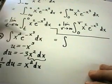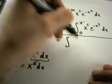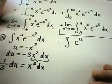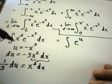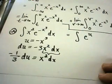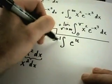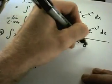When I do my anti-derivative, I'll get e to the u, and then the x squared dx is going to be replaced with the negative one third du.